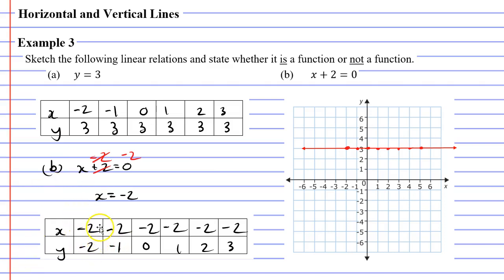So we get the point where x is negative 2 and y is negative 2 — that's this point here. We get the point where x is negative 2 and y is negative 1 — that's this point. And once again it doesn't matter what y value you pick, x will be negative 2 every time. This time we get a vertical line, which passes through the point where x is negative 2.